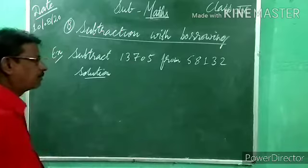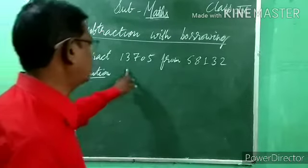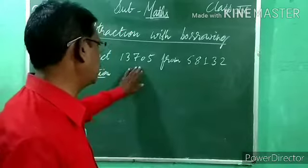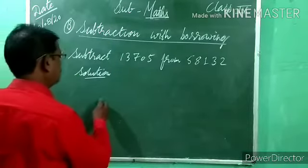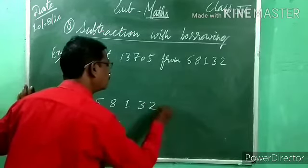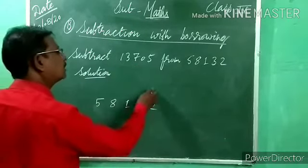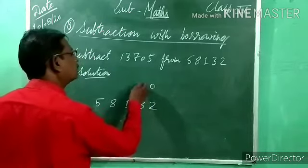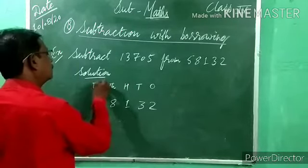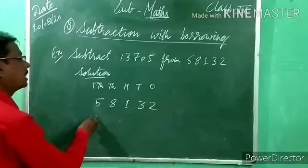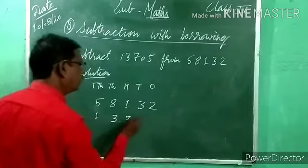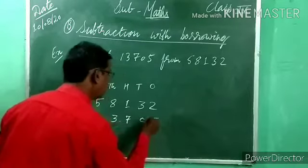Subtract 13,705 from 58,132. Which number is bigger — 13,000 or 58,000? 5 is bigger, so 58,132 is on top. Write 58,132 first. Place values: 2 is 1s, 3 is 10s, 1 is 100s, 8 is 1000s, 5 is 10,000. Below: 1 is 10,000, 3 is 1000, 7 is 100, 0 is 10s, 5 is 1s.